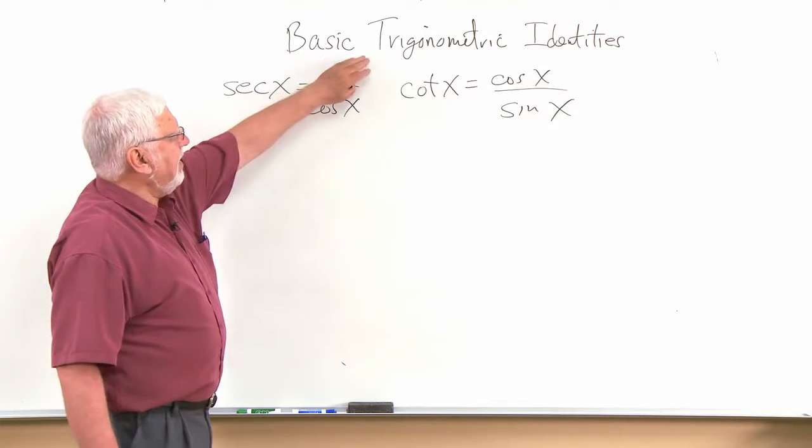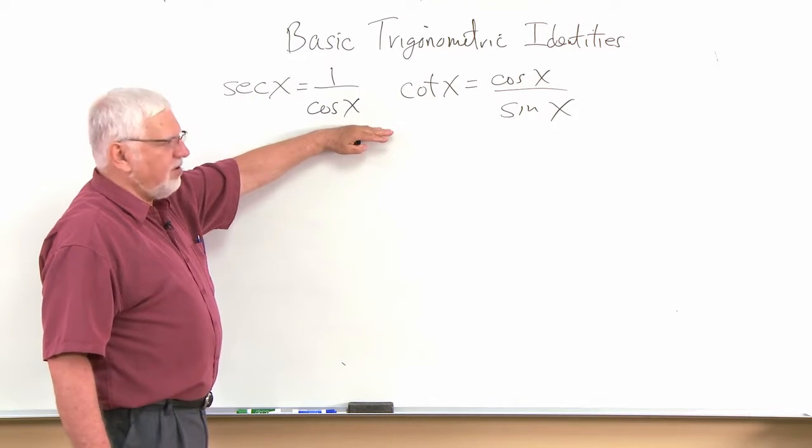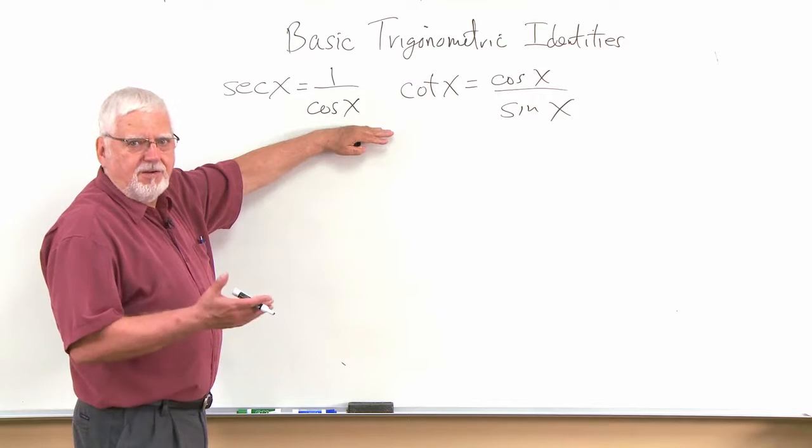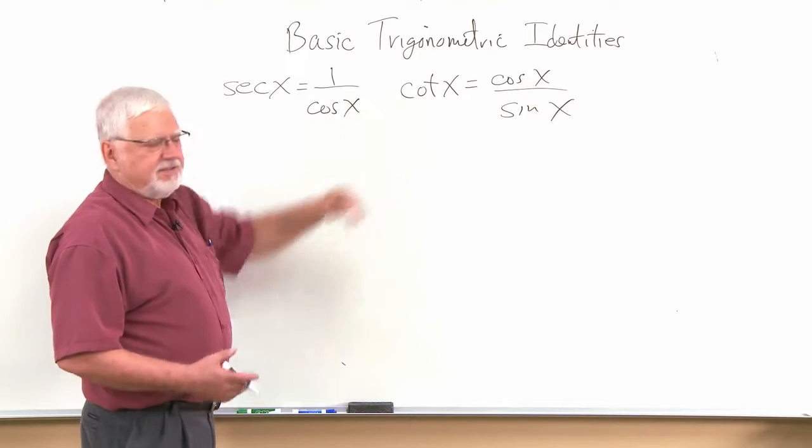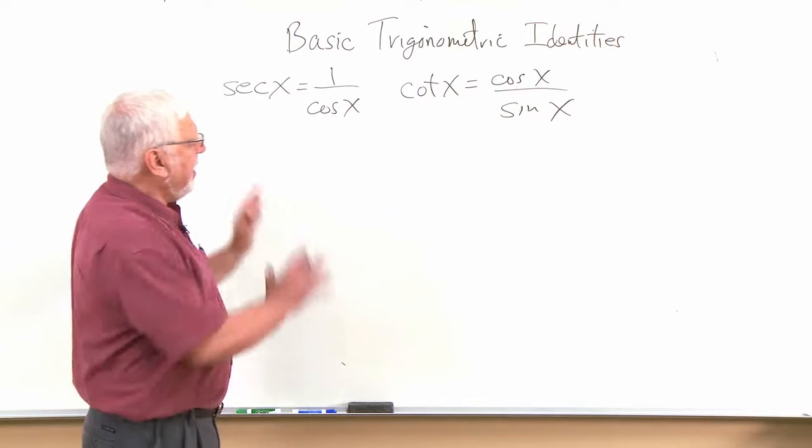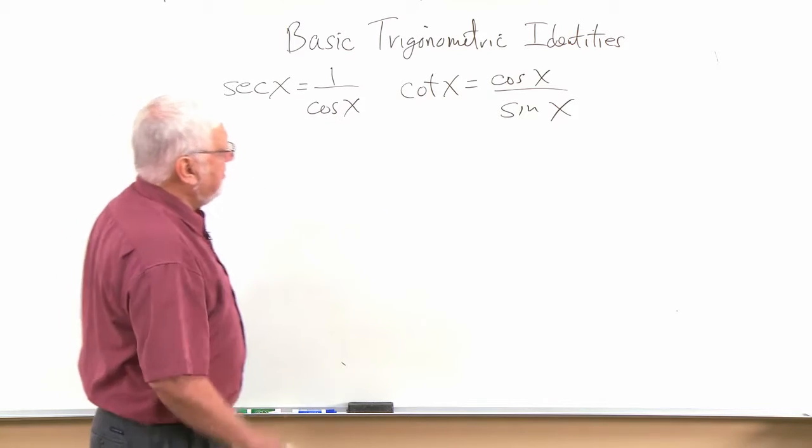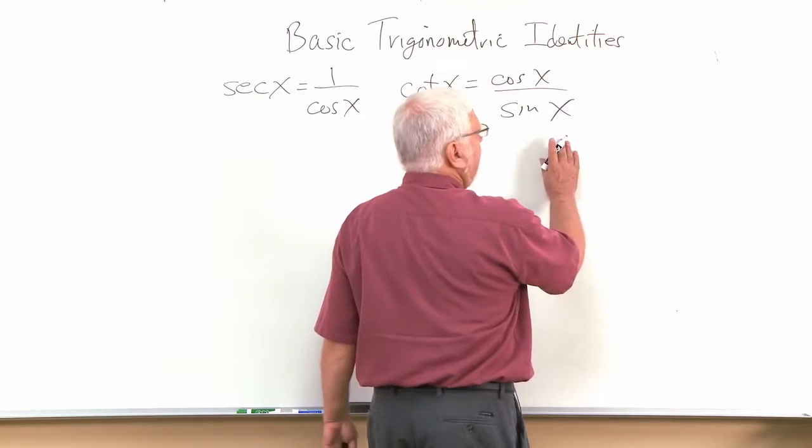So when you've got the basic trig identities, we're actually going to go to the definition. Later on we're going to verify identities and then we'll use these to build those. So this will kind of be our base. And your formula sheet shows you all the ones that you have.